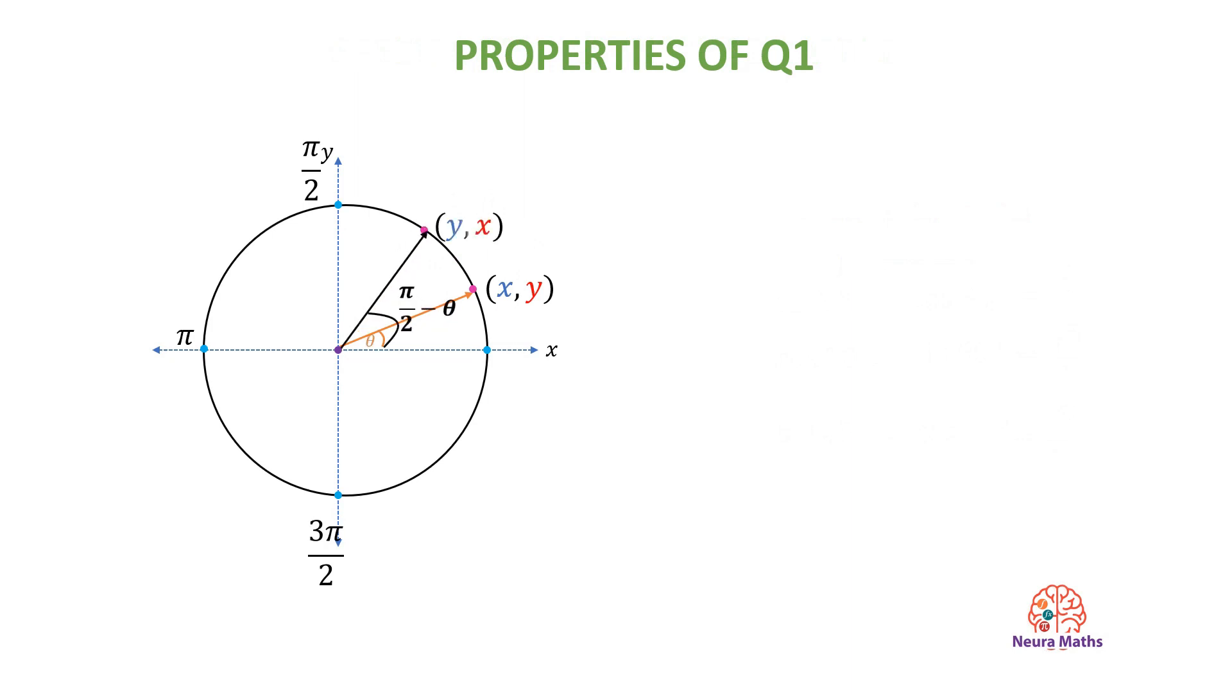Mathematically, we can say the cosine of pi over 2 minus theta is equal to the sine of theta. And the sine of pi over 2 minus theta is equal to the cosine of theta.